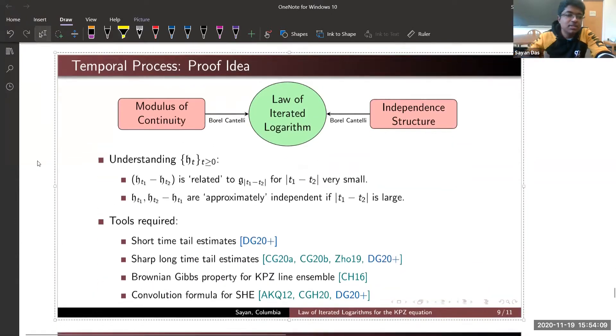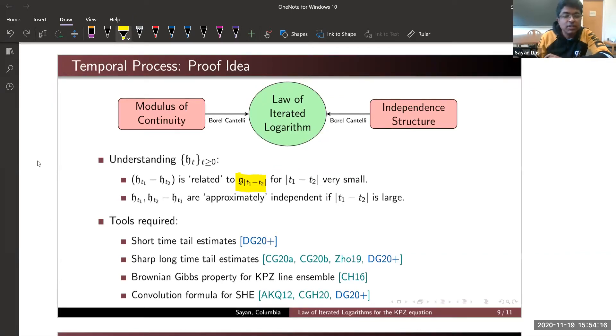One also needs to quantify what do I mean by approximately independent, but I cannot do this in this short talk. Let me briefly say what are the tools that we used. Since it is related to the short time tails, we need some idea about the short time tail behavior. We developed some short time tail estimates. Since our law of iterated logarithm has the exact constant, we need to rely on long time tail estimates as well. Also, unlike Brownian motion, the increments are very complicated. The relationship between H_{t1} and H_{t2} is not very simple. One has to go through this heavy machinery called Brownian Gibbs property for KPZ line ensemble and convolution formula for stochastic heat equation to see how these things are related.